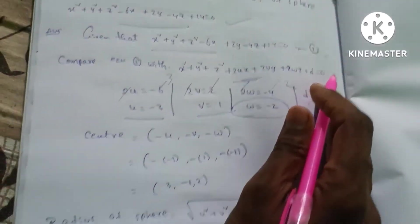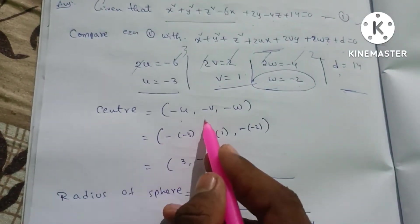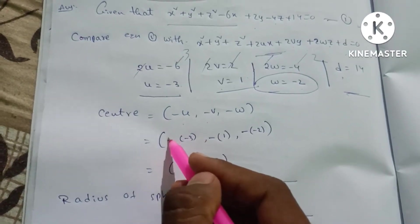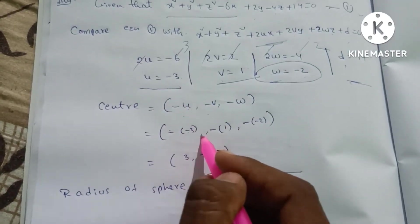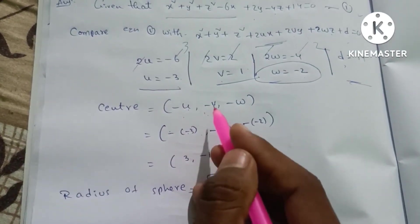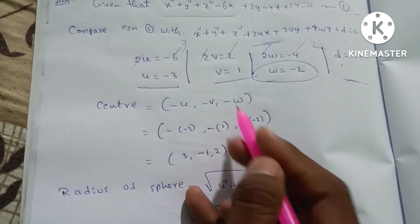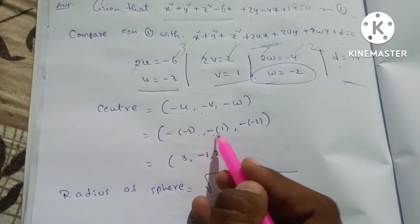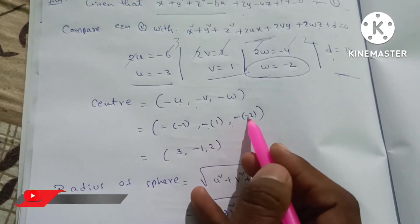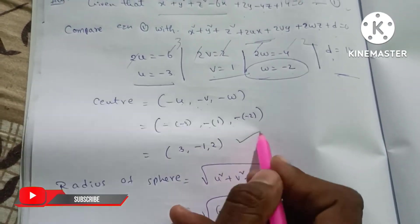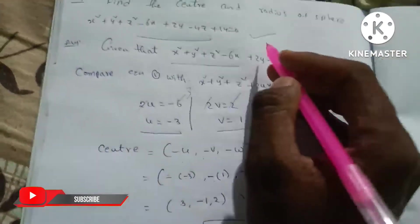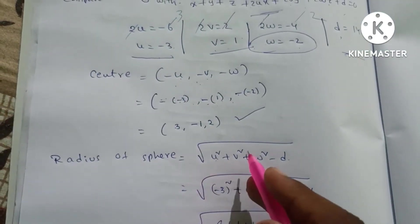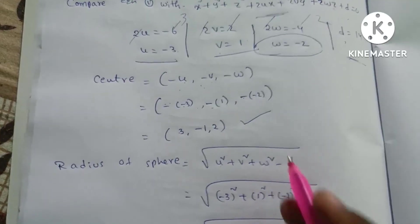So we have the center formula: (minus u, minus v, minus w). Substituting: minus u equals minus of (minus 3) equals 3. Minus v equals minus of 1 equals minus 1. Minus w equals minus of (minus 2) equals 2. So the center is (3, minus 1, 2). The radius formula is: root over (u square plus v square plus w square minus d).